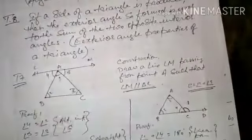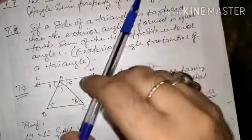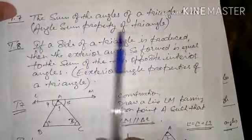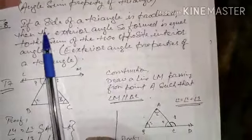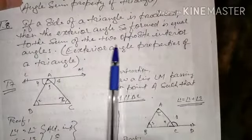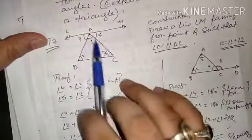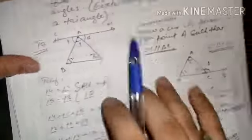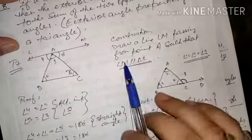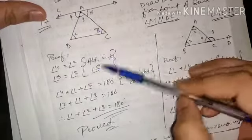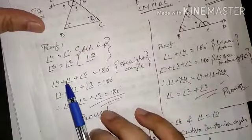Theorem 7: the sum of the interior angles of a triangle is 180 degrees (angle sum property). For triangle ABC, draw a line LM through point A parallel to BC. Then angle 4 equals angle 2 and angle 5 equals angle 3 — both by alternate interior angles.